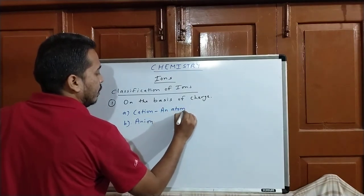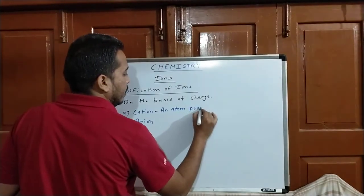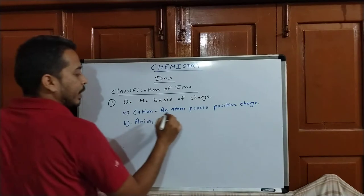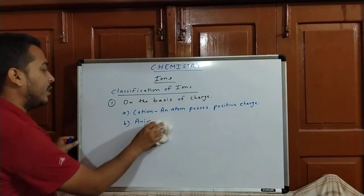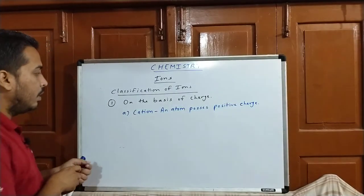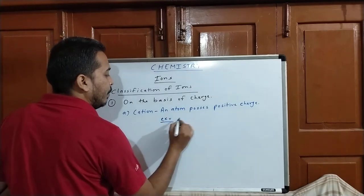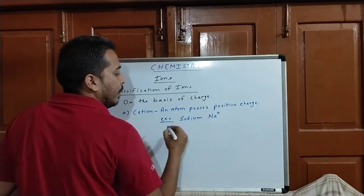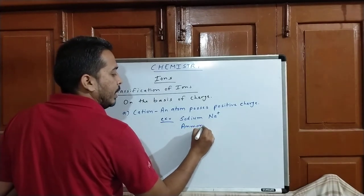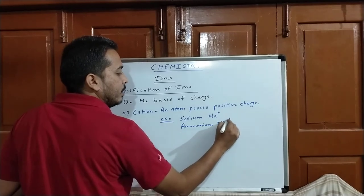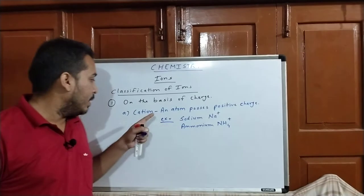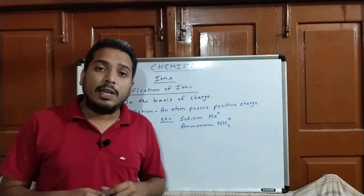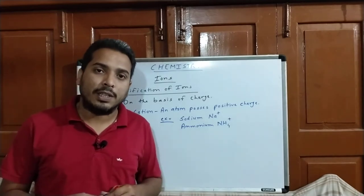An atom that possesses a positive charge is called a cation. For example, sodium ion Na+ is a cation — here one atom carries a positive charge. And ammonium ion NH4+ is also a cation — it has a group of atoms which carry a positive charge.